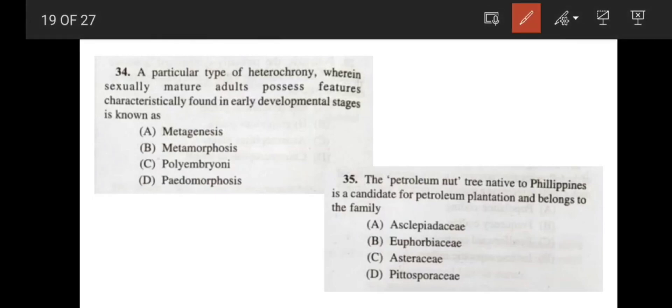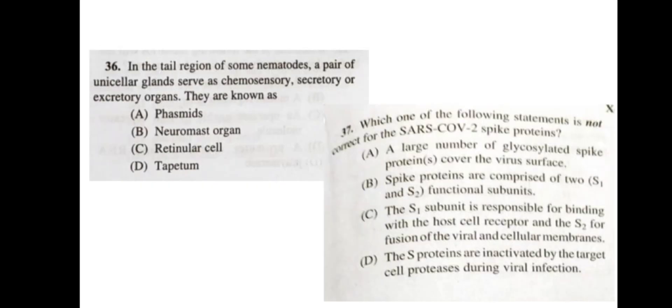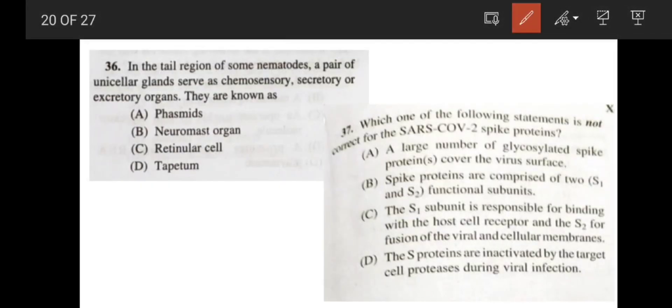Now, coming to the next question. A particular type of heterochrony where sexually matured adults possess features characteristically found in the early developmental stage is known as pedomorphosis. Very easy one. Next, the petroleum nut tree native to Philippines is a candidate for petroleum plantation and belongs to which family? The correct answer will be option D, Pittosporaceae family. Next question. In the tail region of some nematodes, a pair of unicellular glands serve as chemosensory, secretory and excretory organs. They are known as phasmids, option A.